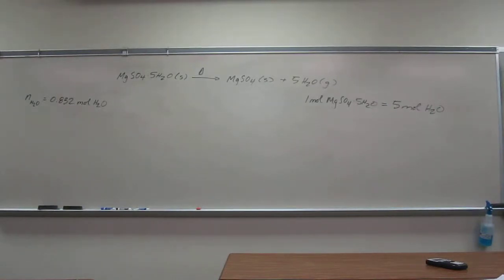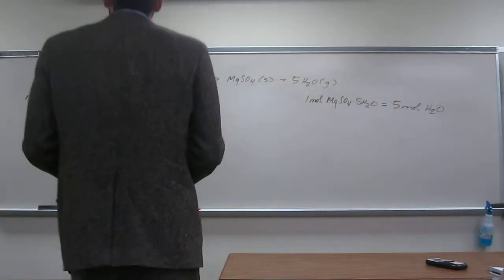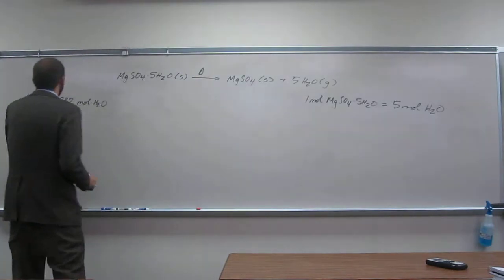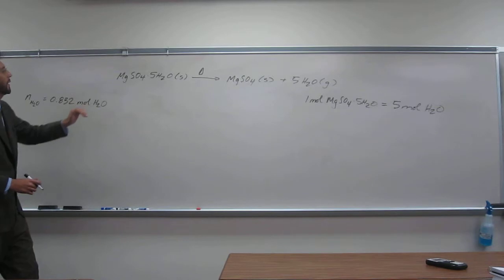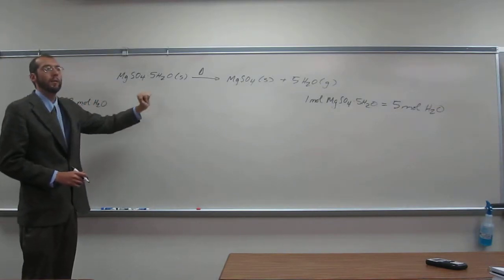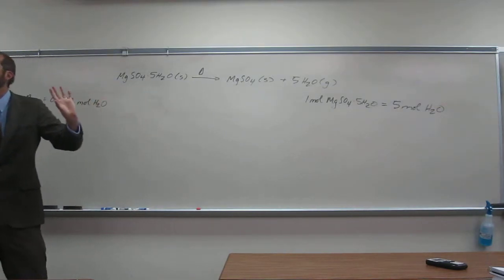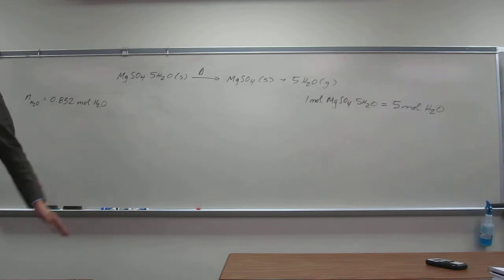Okay, so let's figure out this. So we've got all this information, we put it all together, right? If we got 0.832 moles of water, how would we figure out how many moles of magnesium sulfate hydrate did we start with? Right, we would have to do this conversion factor.